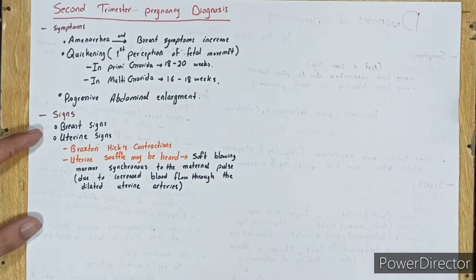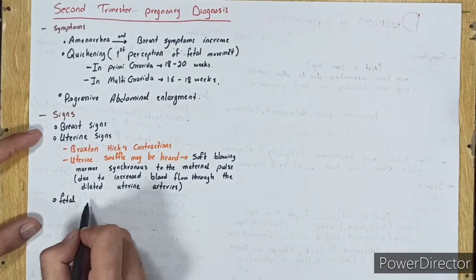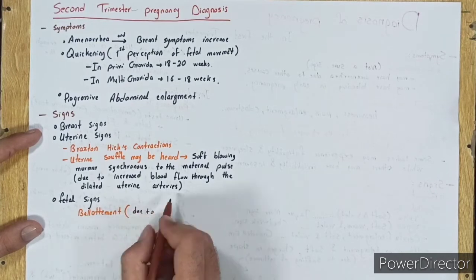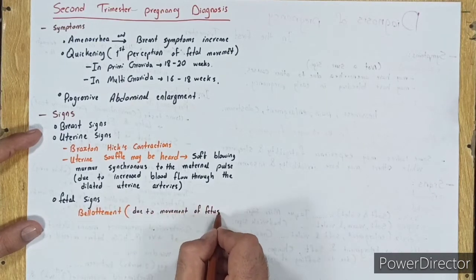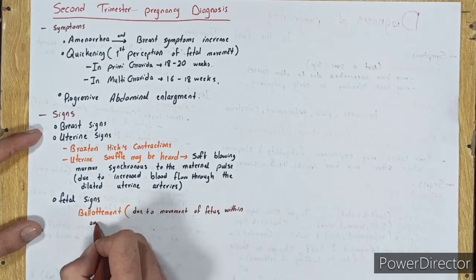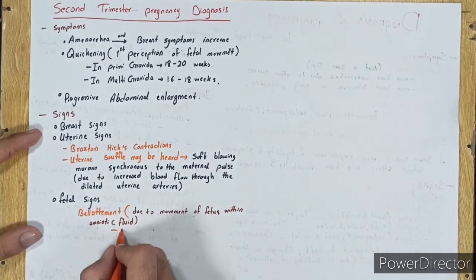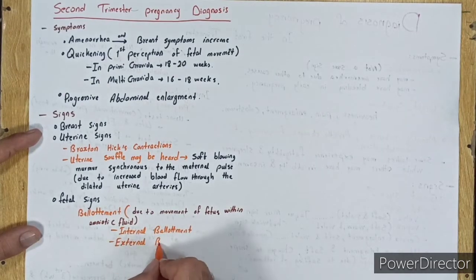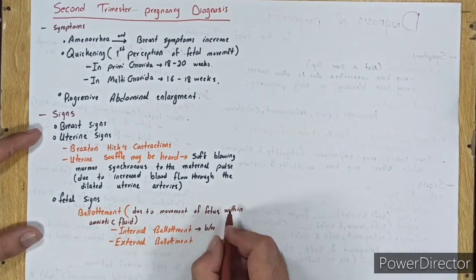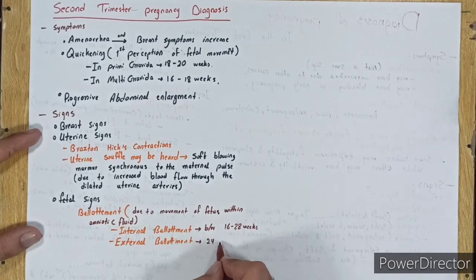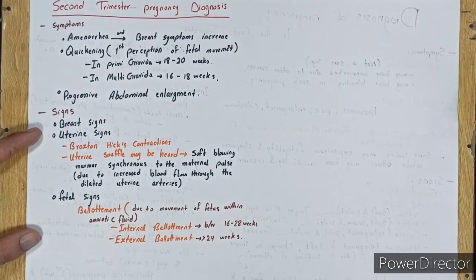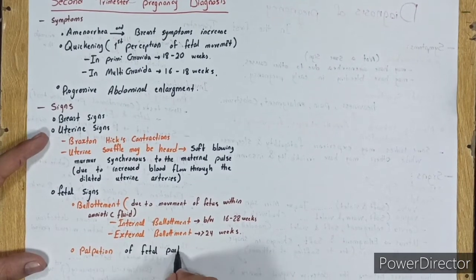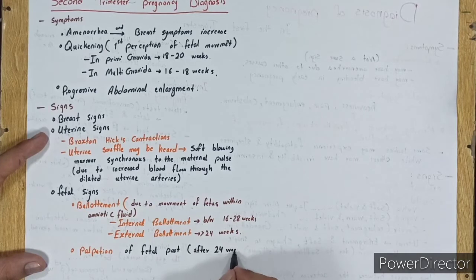Fetal signs: Ballotment, due to movement of the fetus within amniotic fluid. Internal ballotment starts between 16 to 28 weeks and external ballotment starts after 24 weeks. Palpation of fetal parts after 24 weeks.